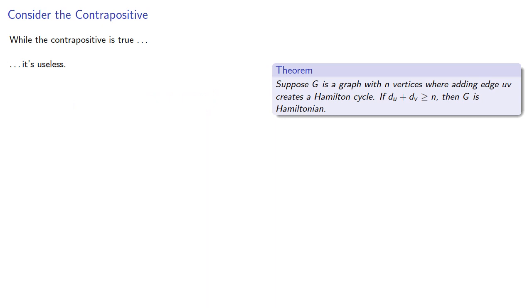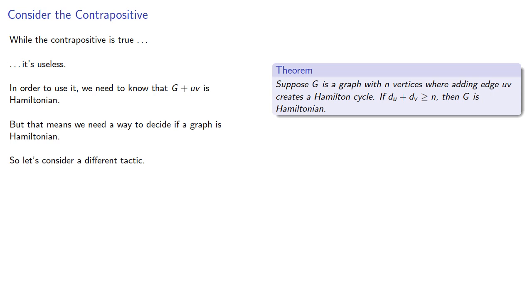The problem is, in order to use it, we need to know that G plus the edge uv is Hamiltonian, but that means we need a way to decide if a graph is Hamiltonian. So let's consider a different tactic.